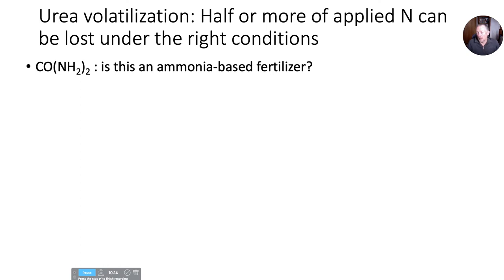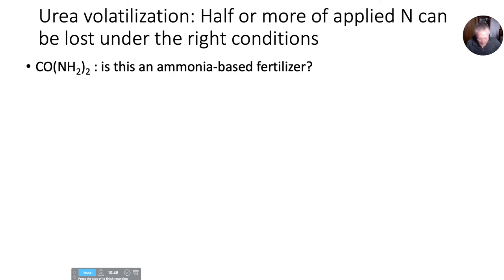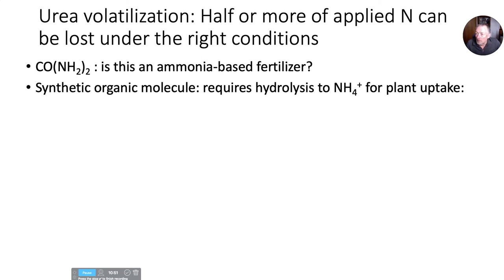Urea volatilization: if we're not careful, we can lose half or more of the nitrogen fertilizer applied to volatilization. Urea is not an ammonia-based fertilizer, so why is it bad? Well, it's also not plant-available in this form. It's a synthetic organic molecule when you put it on the soil, so it has to be hydrolyzed to form ammonium before plants can take it up. There are two stages for this.